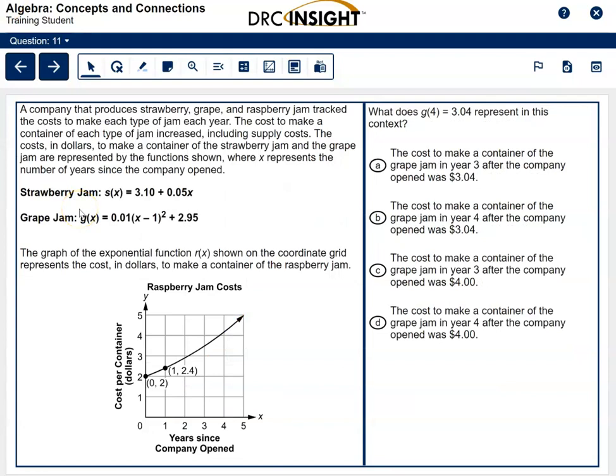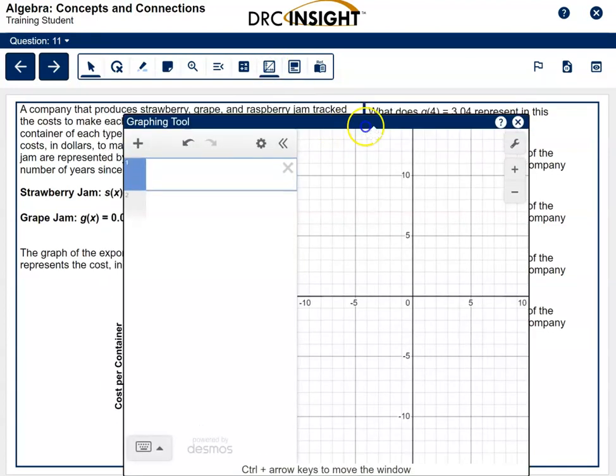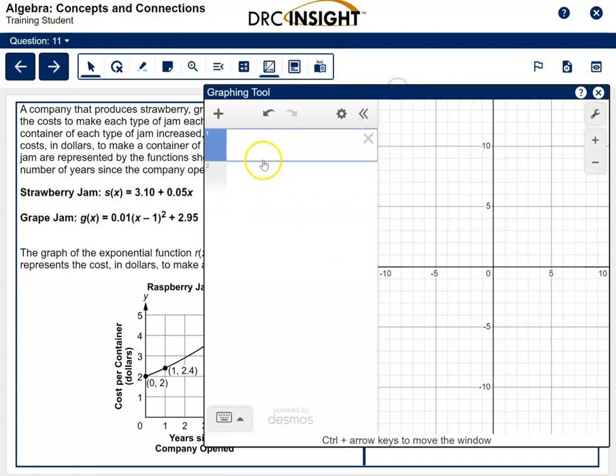The next question is question 11. We're on the same scenario with the same three functions, but this time we're asked to look at G. If you notice, the name G is for grape jam. I don't think we're even going to need this tool, but I'm going to use it anyway to show you what you might do. So for grape jam, we're going to type in the function G of X.